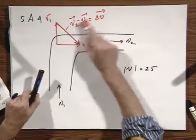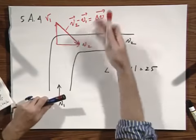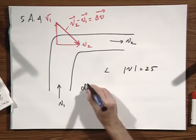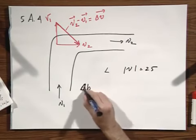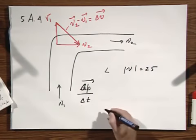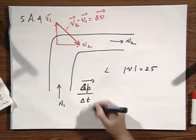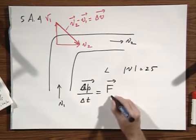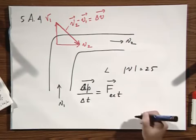If there is a change in velocity, there must be a force on the system. Remember, Delta P over Delta T, which is a change of momentum per unit time, equals an external force.